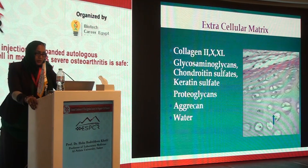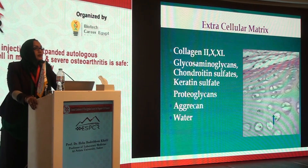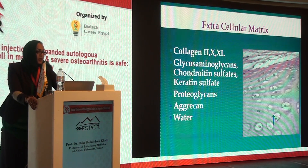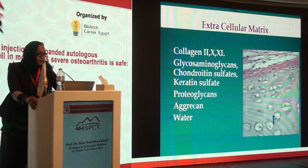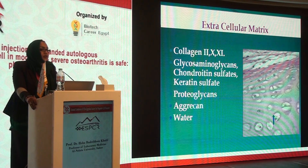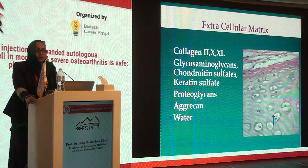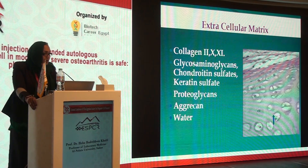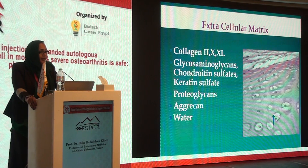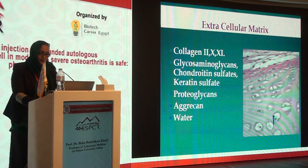The extracellular matrix is approximately 90% collagen type 2, with collagen types 10 and 11, glycosaminoglycans, chondroitin sulfate, keratan sulfate, proteoglycans such as aggrecan, and water.